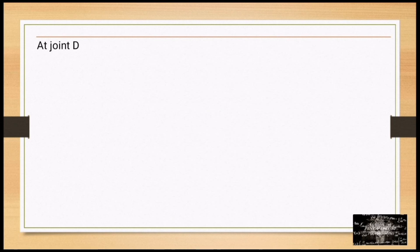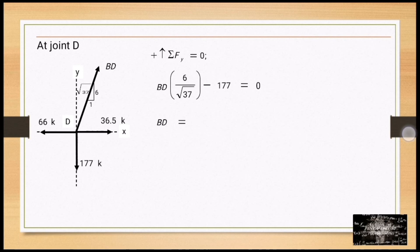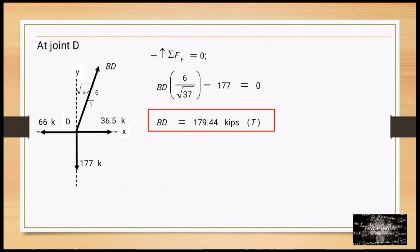At joint D, summation of forces along y equals 0: BD times (6/√37) minus 177 equals 0. Solving, BD equals 179.44 kips in tension.